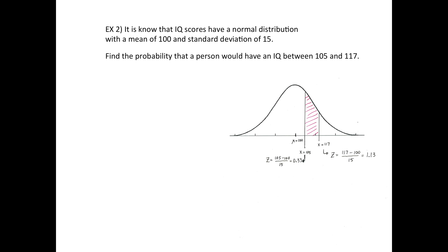Again using IQ scores — this time, what is the probability that a person's IQ would be between 105 and 117? Here's what the picture looks like: the mean of 100 is in the middle, 105 is just to the right of that, and 117 is further right with shading in between the two. Applying the z-formula gives z equals 0.33 for the score of 105, and z equals 1.13 for the score of 117.